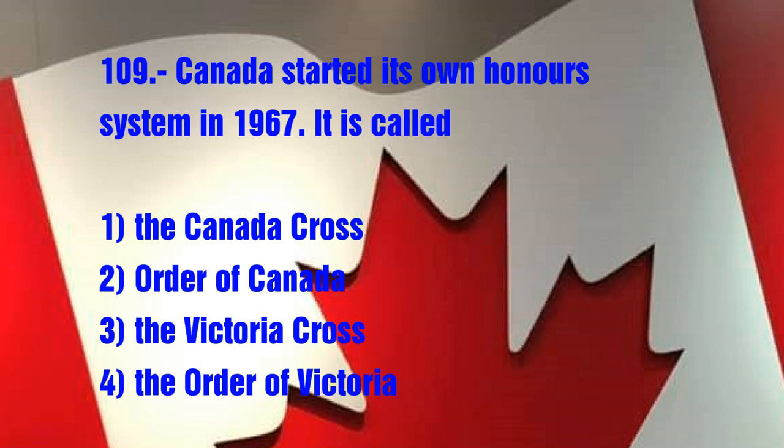Question No. 109. Canada started its own honor system in 1967. It is called: 1. The Canada Cross, 2. Order of Canada, 3. The Victoria Cross, 4. The Order of Victoria. The answer is 2. Order of Canada.